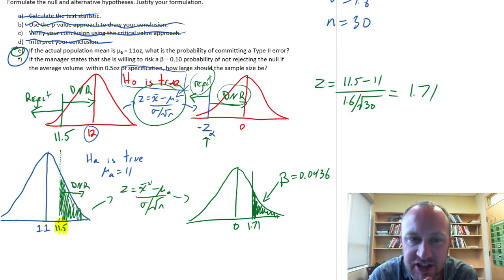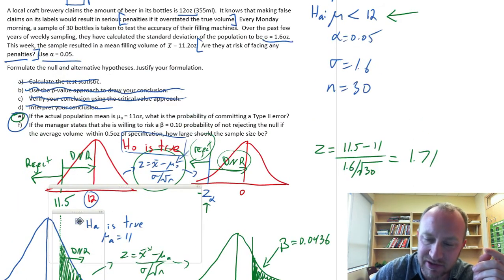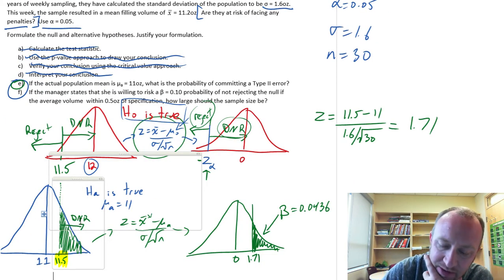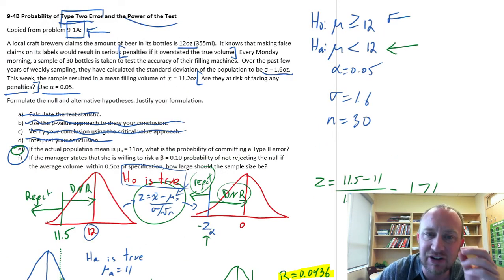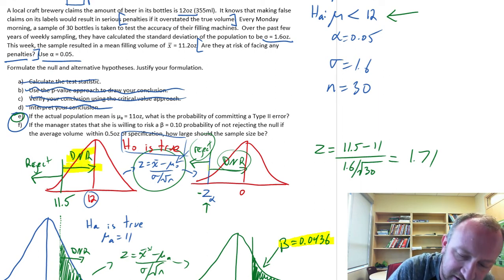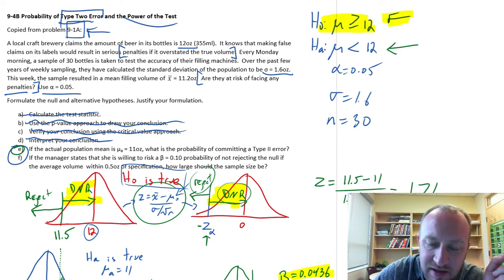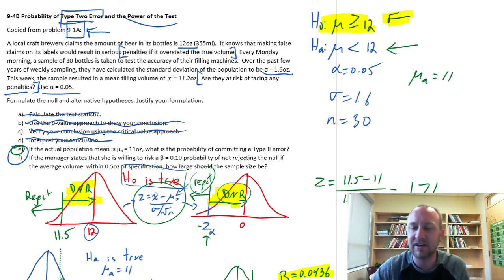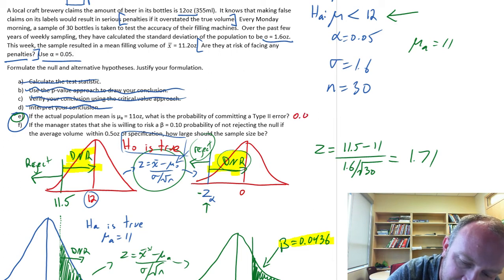What this means: if my true population has a mean of 11 — a value that satisfies our alternative hypothesis — there's a probability just over 4%, specifically 4.36%, that I draw a sample from that distribution that falls into my do-not-reject space, causing me to believe the null hypothesis when in fact my true mean is 11 and I should be rejecting it. That's our answer to part E: beta = 0.0436.